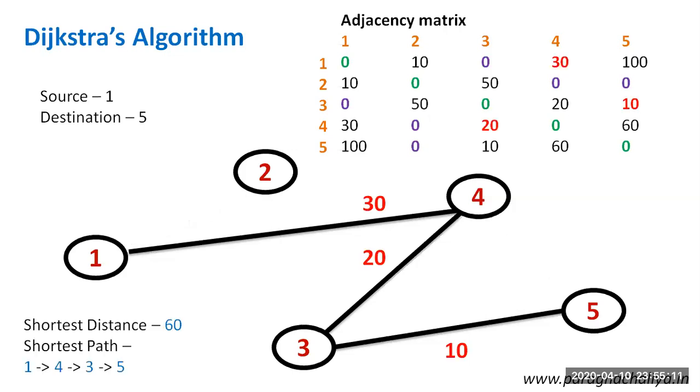So it is like this. The shortest distance will be 60 and the shortest path will be 1 to 4, 4 to 3, and 3 to 5.